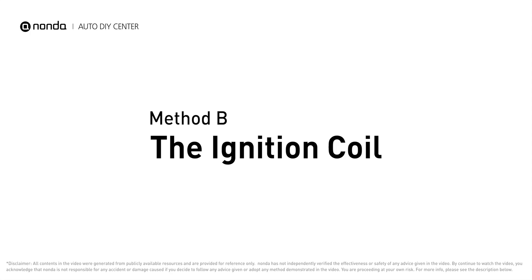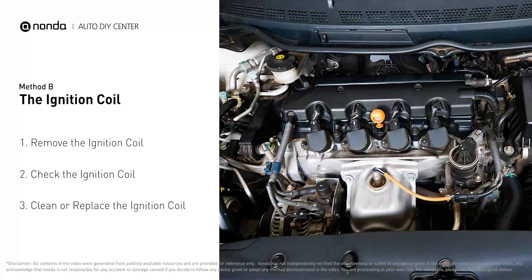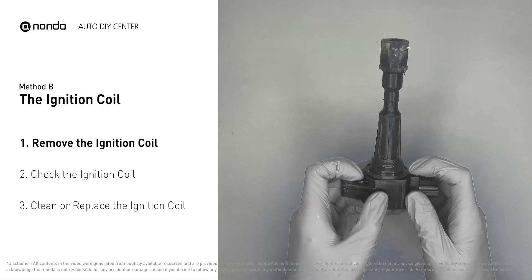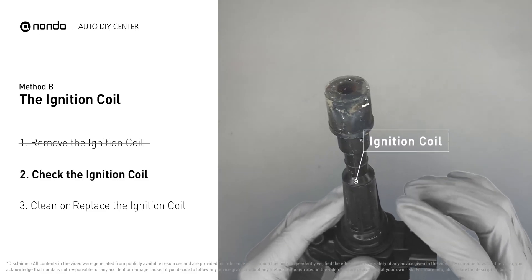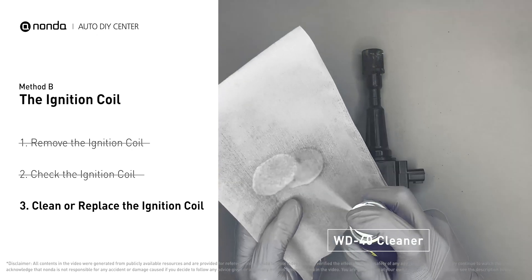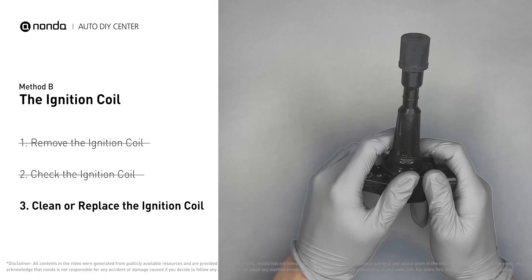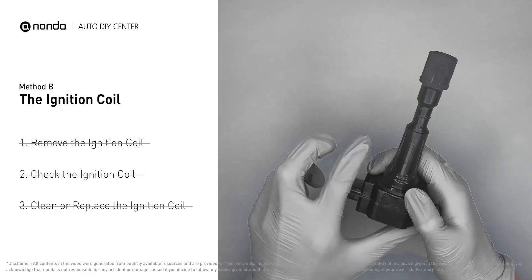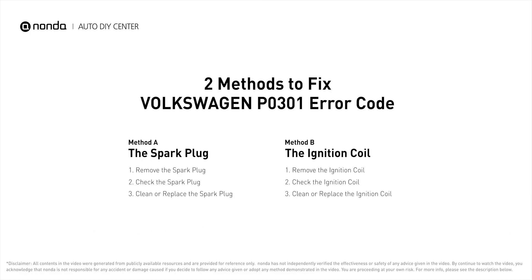Method B: the ignition coil. Ignition coils are usually installed directly at the cylinder head above the spark plug. Carefully remove the ignition coil from the engine and check whether it is stained or damaged. If the ignition coil is covered with engine oil or stains, simply clean it with a WD-40 cleaner. Otherwise, replace the damaged ignition coil with a new one.